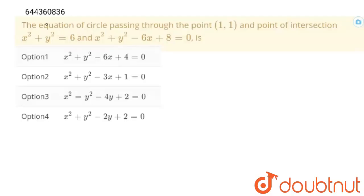Hello students. The question is: find the equation of the circle passing through the point (1, 1) and the points of intersection of two given circles. So let's solve this problem.